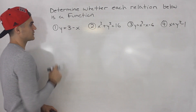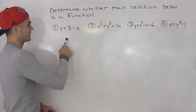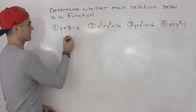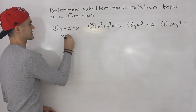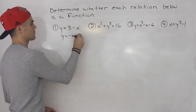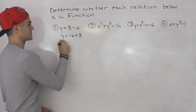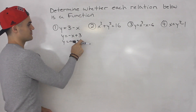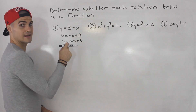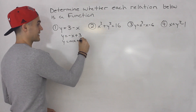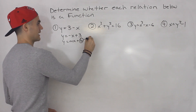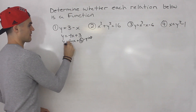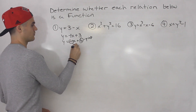So we've got number one here: y equals 3 minus x. What kind of relation is this? Notice that this is just a line. We can rewrite this as negative x plus 3, in y equals mx plus b form. The b value is 3 — that's always the y-intercept — and there's a negative 1 in front of the x, so that is the slope.